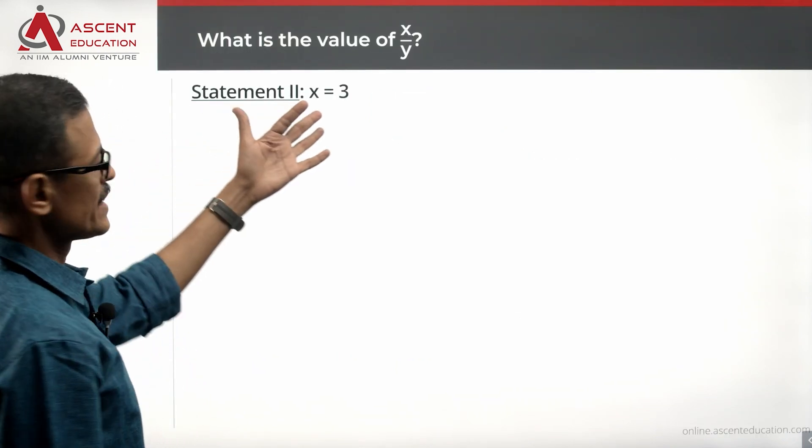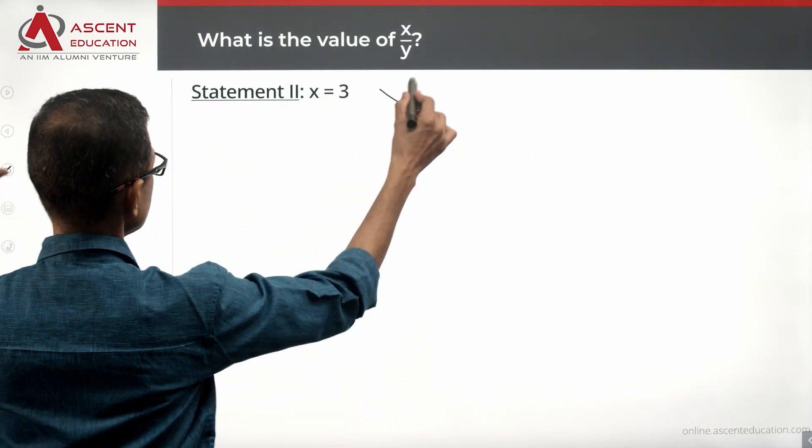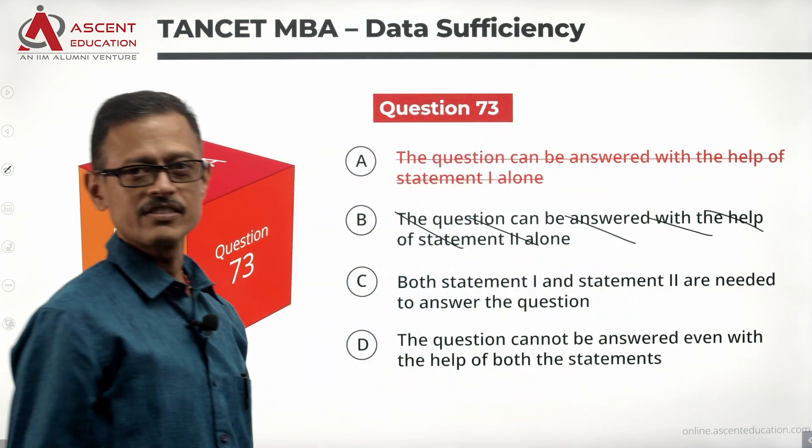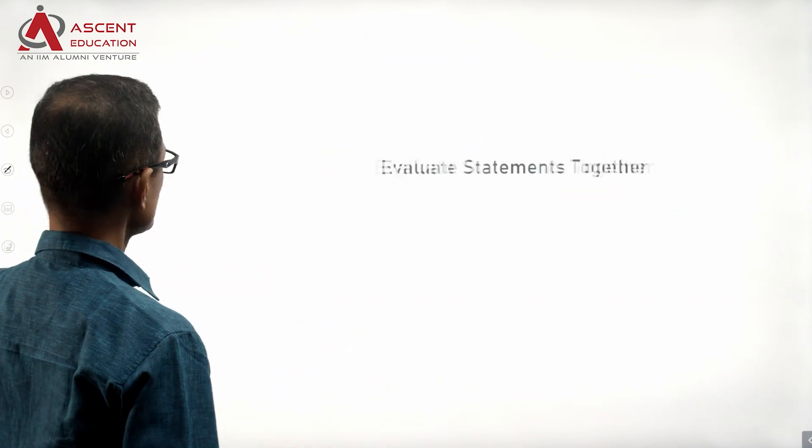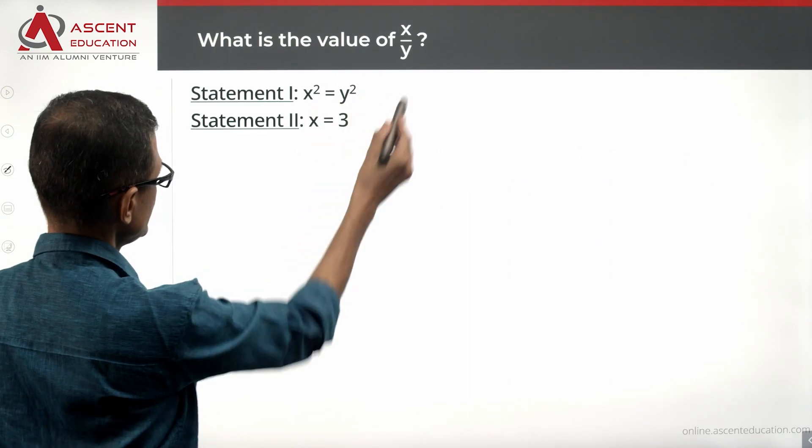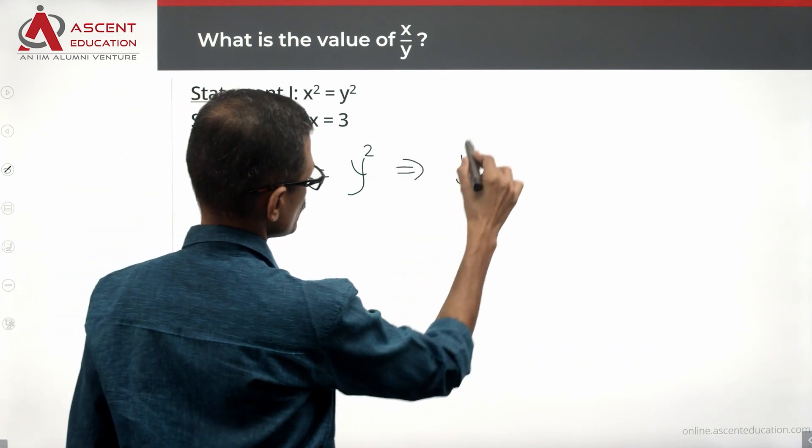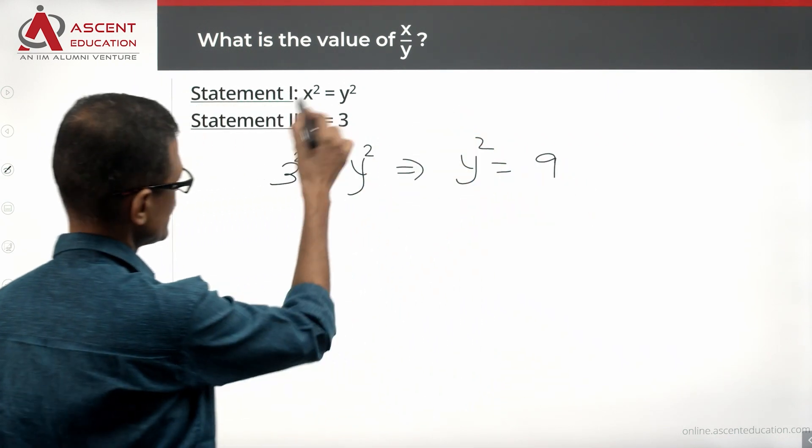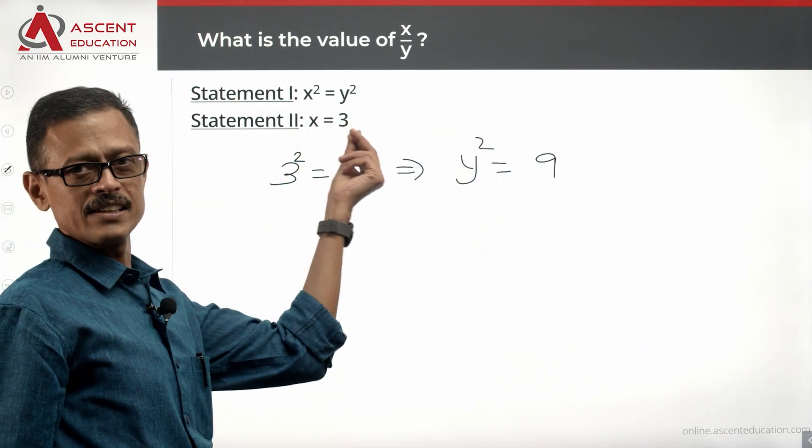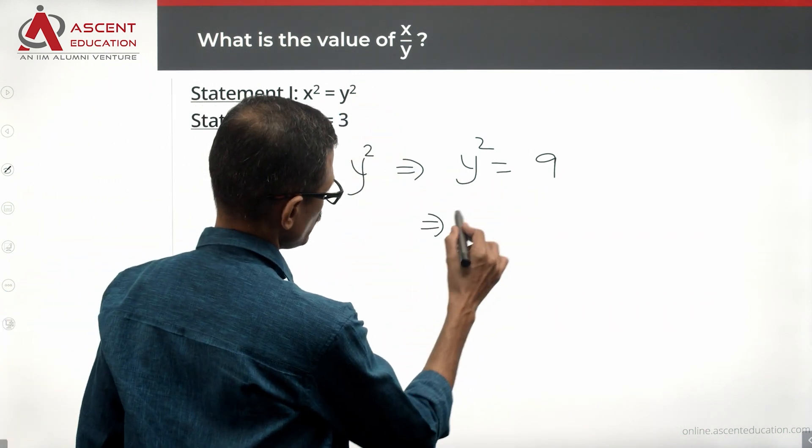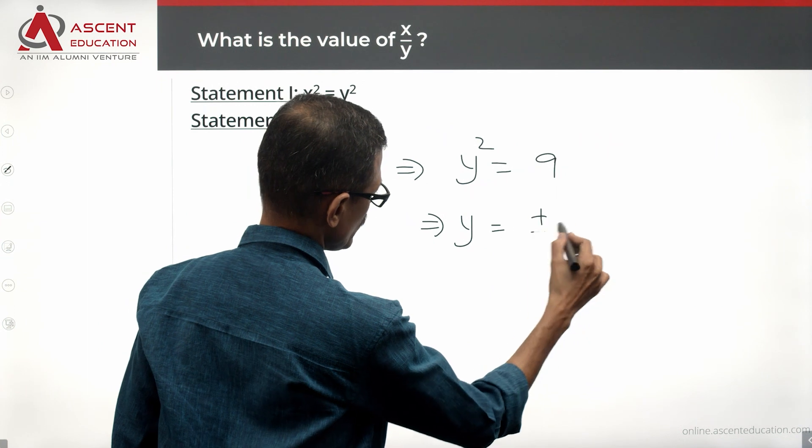Take a look at statement 2 alone. It says x equals 3. Eliminate answer option B—that's the easy one. Statement 2 is not sufficient. Combine the two. We know that x equals 3, so 3² equals y², or y² equals 9. From the combined statements, x equals 3, so y² equals 9, which means that y could be plus 3 or minus 3.